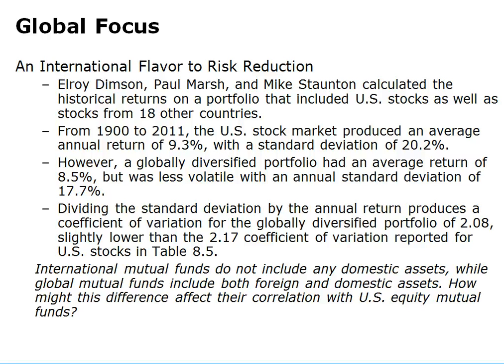Welcome to Part 2 of Risk and Return from Chapter 8. A couple of researchers put together historic returns on a portfolio that included U.S. stocks as well as stocks from 18 other countries. For the 111-year period, U.S. stocks produced an average return of 9.3% and a standard deviation of 20.2%. However, a globally diversified portfolio had an average return of 8.5% and a standard deviation of 17.7%, showing less volatility in the dispersion of returns.